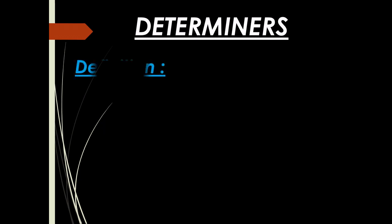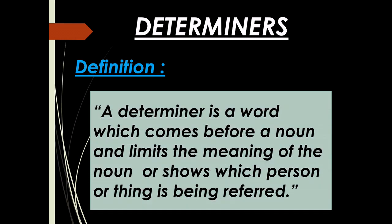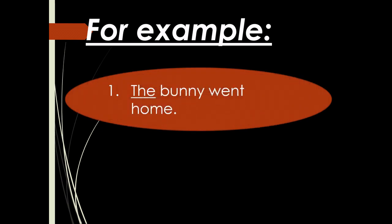Let's see again what is the meaning of determiners. A determiner is a word which comes before a noun — here the meaning of noun is a name of a person, place, animal, or thing — and limits the meaning of the noun or shows which person or thing is being referred to.